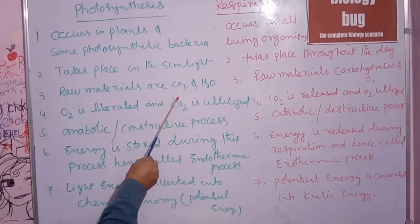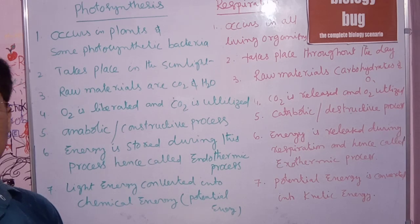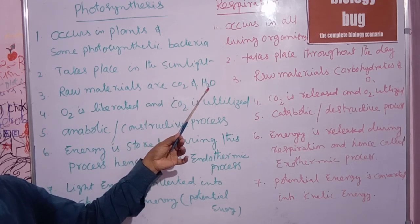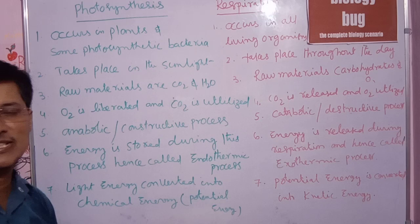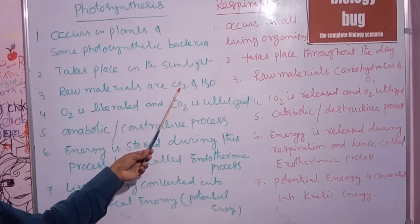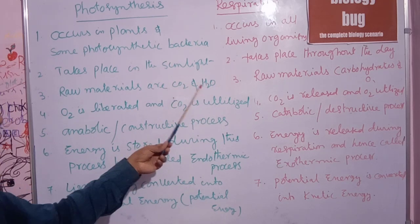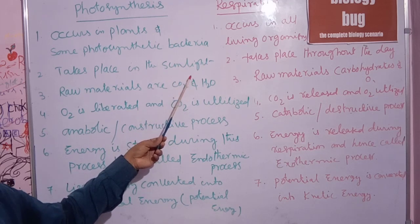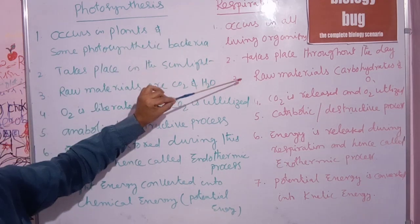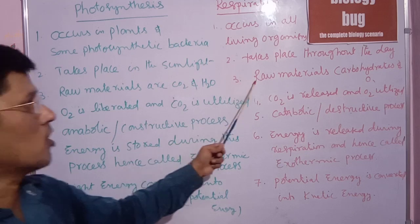In photosynthesis, plants prepare their own food by using carbon dioxide and water. Plants utilize carbon dioxide from the environment and water from the soil. Sunlight acts on these, and chloroplast drives the photosynthesis process.